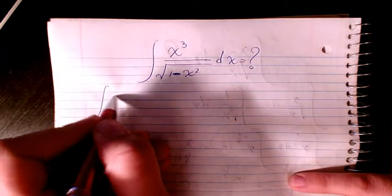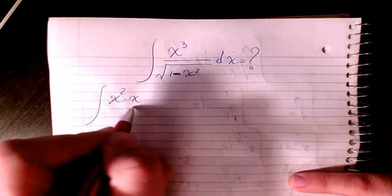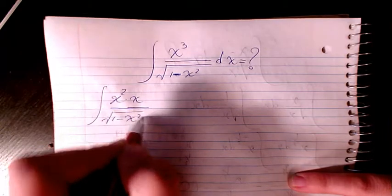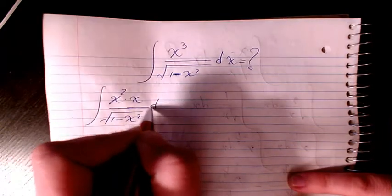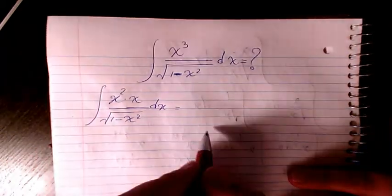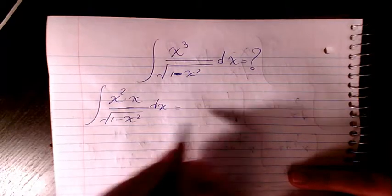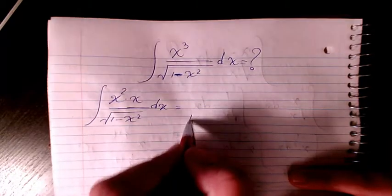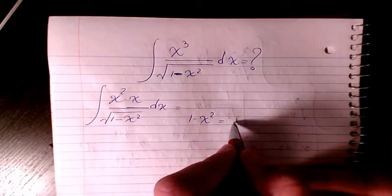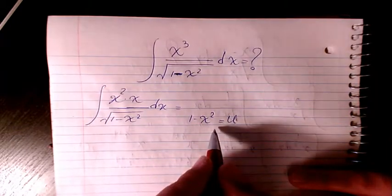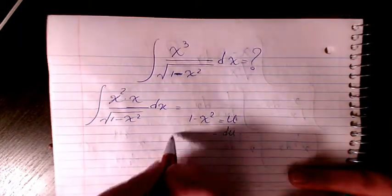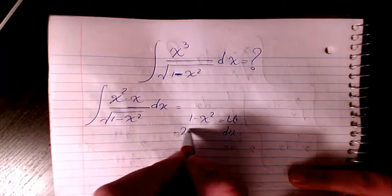Instead of x cubed I can write x squared times x divided by square root of x squared dx. Then I can have a substitution or variable change: instead of 1 minus x squared I can write u, and then du will be negative 2x dx.